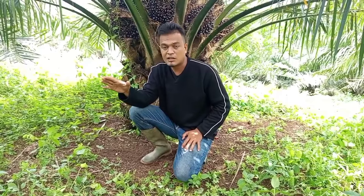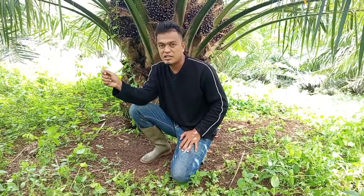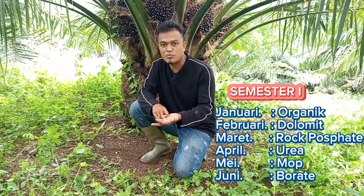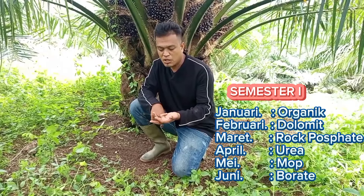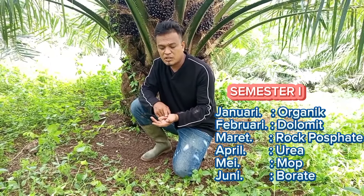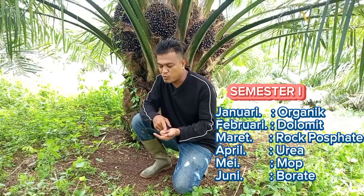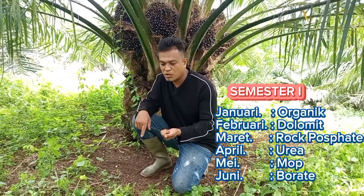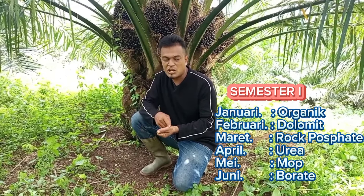Berikan jarak tenggang antara jenis pupuk yang satu ke pupuk yang lainnya selama satu bulan. Berarti di bulan Januari berikan pupuk organik atau pupuk kandang atau janjangan kosong. Di bulan kedua yaitu Februari, berikan dolomit. Di bulan ketiga yaitu Maret, berikan pupuk Rock Pospat. Di bulan keempat yaitu April, berikan pupuk urea.